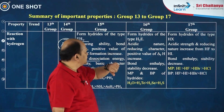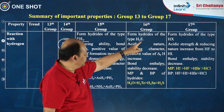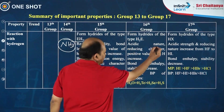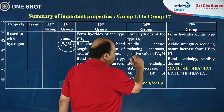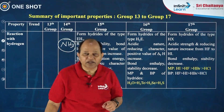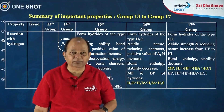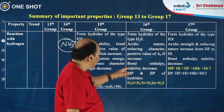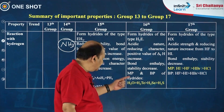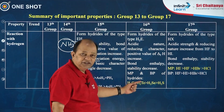Coming to group 16, the hydrides have the general formula H2E, where E is the group 16 element. Here, acidic nature, reducing character, and positive value of heat of formation increase. Water and H2S are exothermic compounds; the remaining are endothermic compounds. Bond enthalpy and stability decrease. These are the orders of boiling point and melting points of these group 16 hydrides.